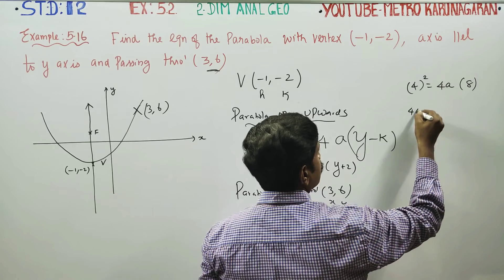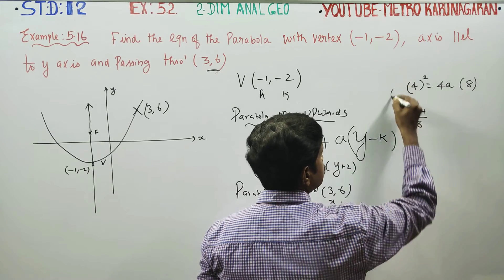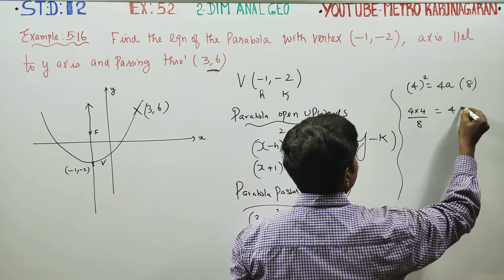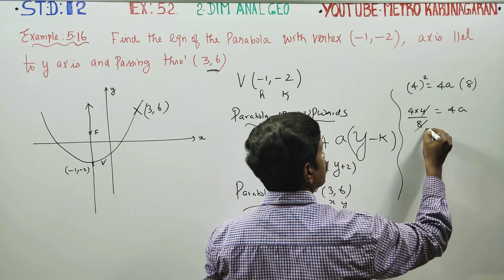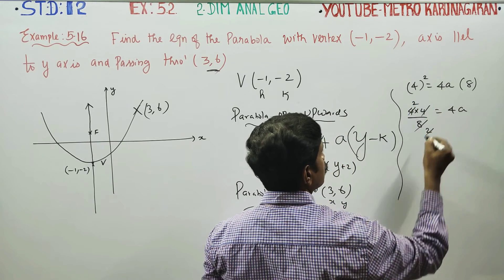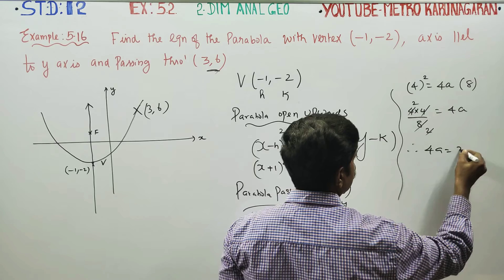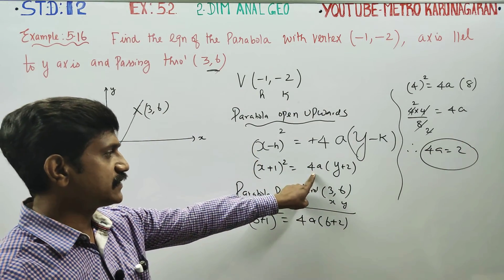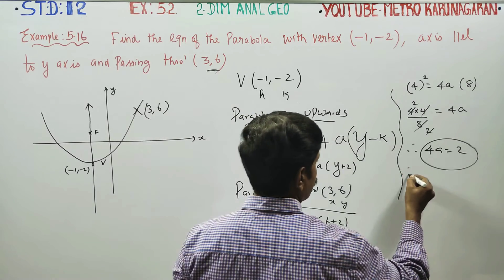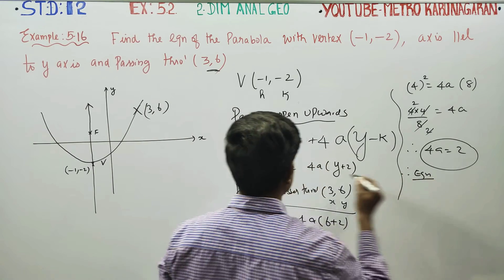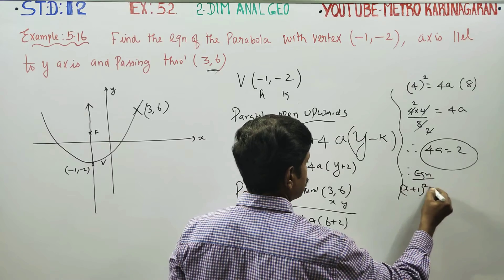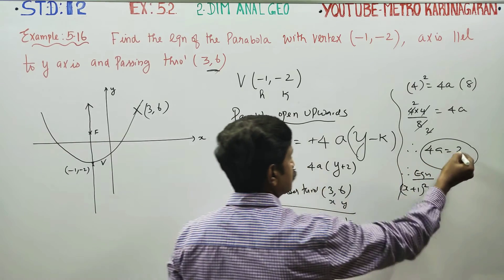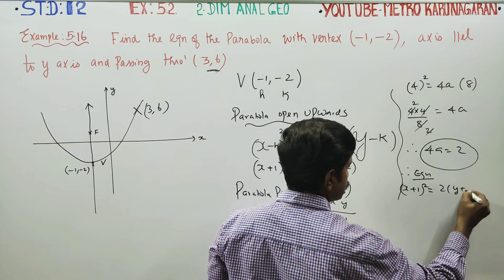4 squared is 16. 16 divided by 8 equals 4a divided by 2. They cancel, you get 2. Therefore 4a equals 2. Now you get the final answer.